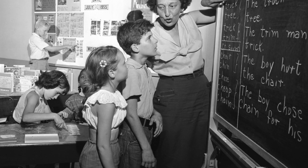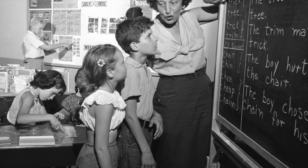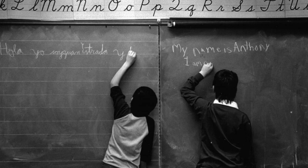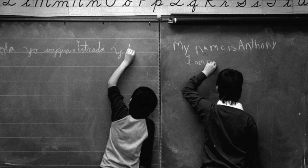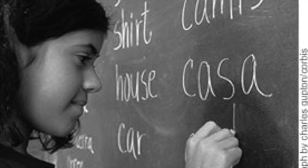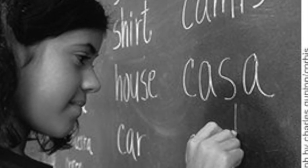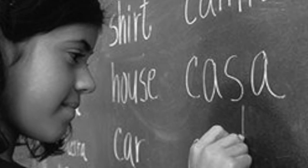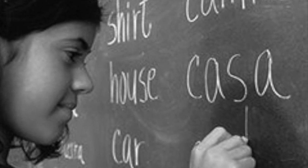There were many movements that took place for change to happen in the United States education system. The Bilingual Education Act of 1968 helped non-English speaking students understand what they were being taught in class. It helped them be able to obtain better jobs and help the economy grow.